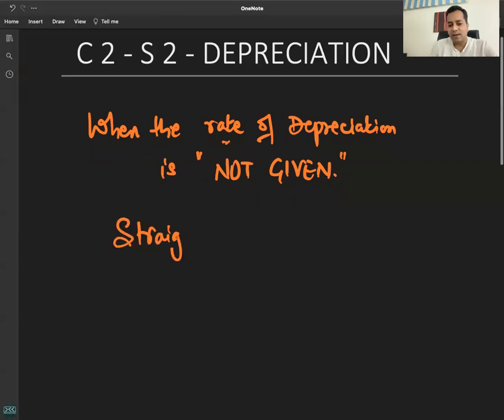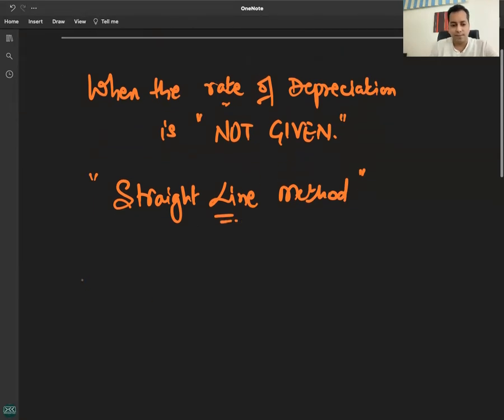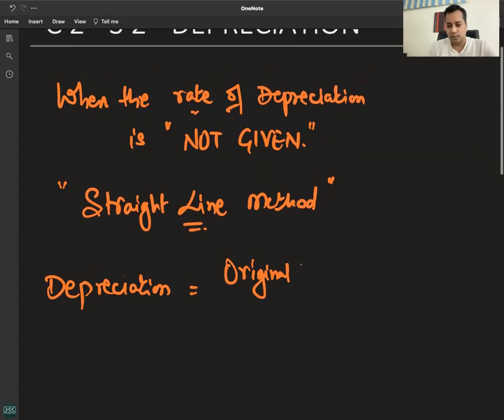Straight line method - when rate of depreciation is not given. The depreciation is equal to original cost of the asset.